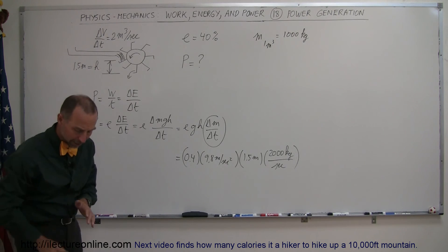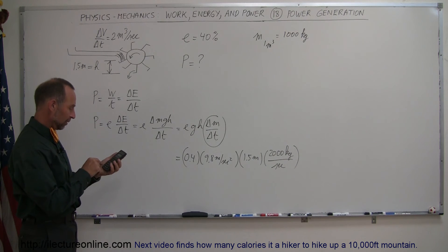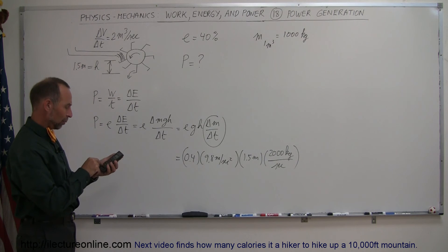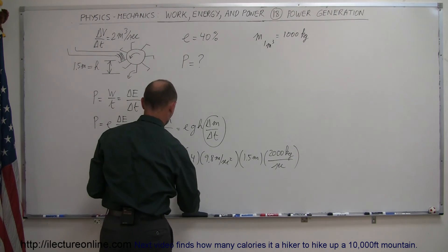So now we need a calculator. Let's find out what the power output is of our little turbine there. So we have 0.4 times 9.8 times 1.5 times 2,000, and that's 11,760 watts.